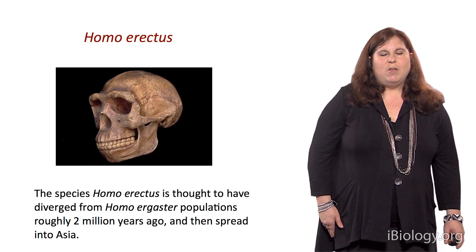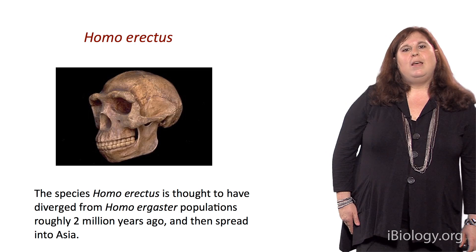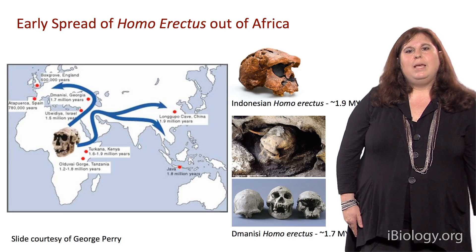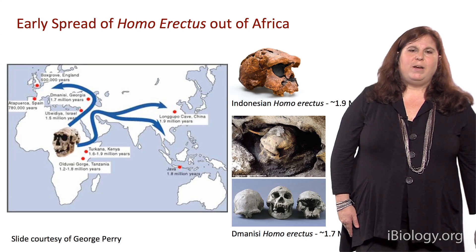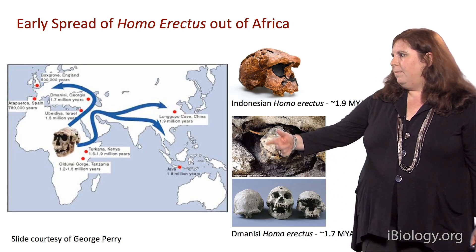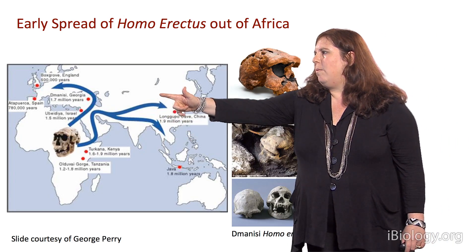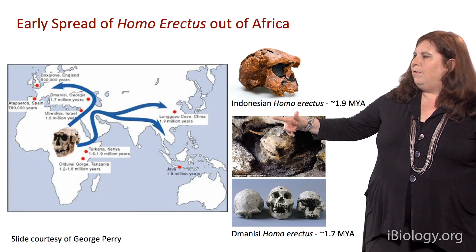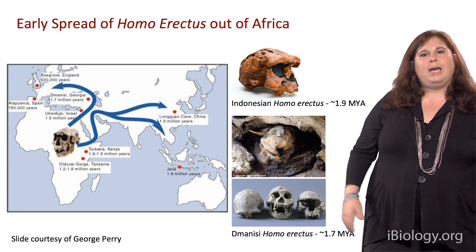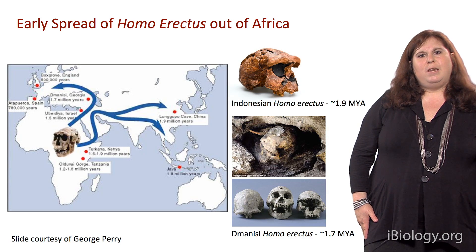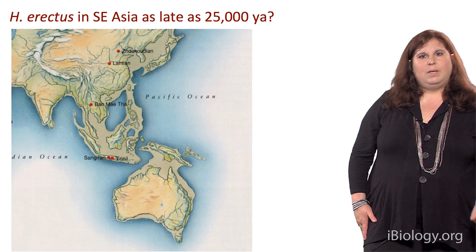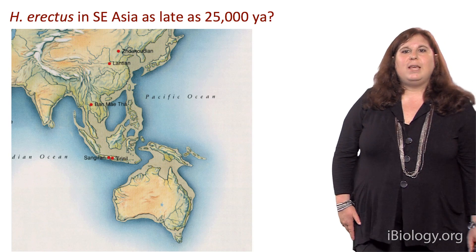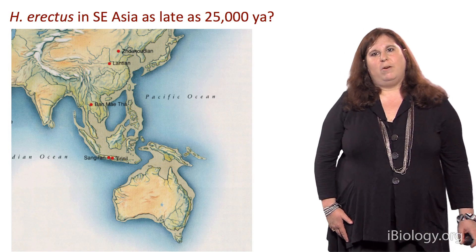The species preceding modern humans is called Homo erectus, which evolved around 2 million years ago. After its origin in Africa, Homo erectus spread across Eurasia. Shown here are some of the oldest fossils of Homo erectus, dated to as early as 1.9 million years ago in Indonesia. This species was very successful, lasting to as recently as 25,000 years ago in Southeast Asia.